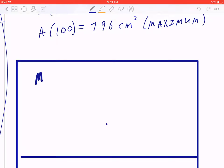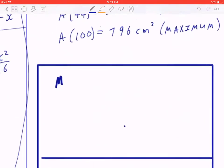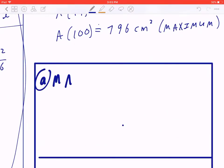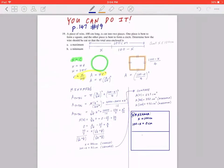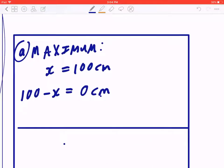So, if you go back to the question in part A, they're asking for maximum. So, maximum occurs when you take the entire wire, x, which is 100 centimeters, and you take 100 minus x, which is nothing, and you bend this into a circle. And nothing is bent to form a square.